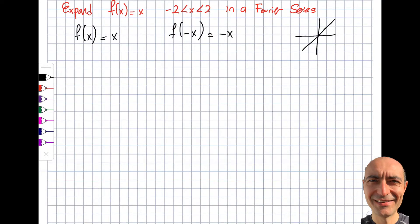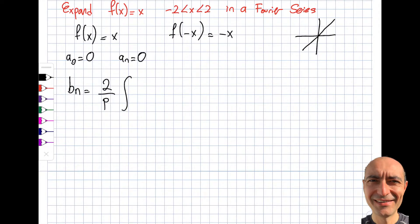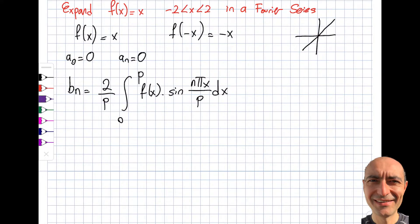Since f is odd, a_0 and a_n are both zero — I don't have to worry about them. The only coefficient I need is b_n, and the b_n formula is: b_n = (2/p) · integral from 0 to p of f(x) · sin(nπx/p) dx. The interval goes from -2 to 2, so p = 2.